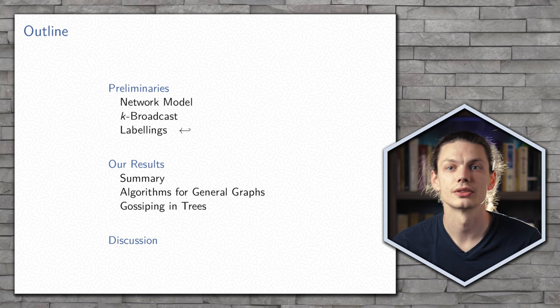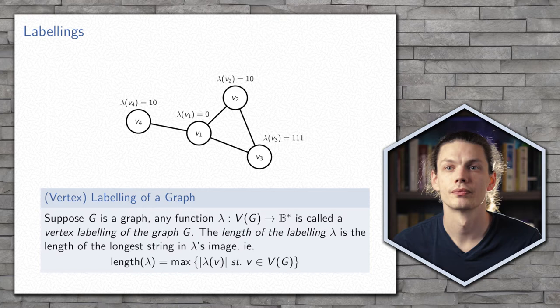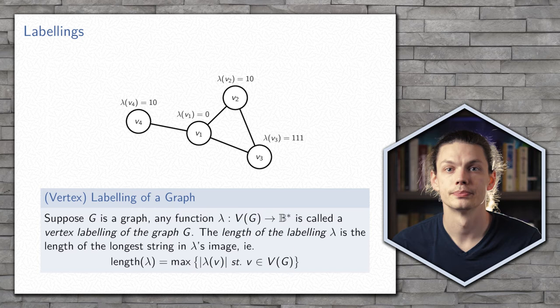So, to solve this problem, we introduce labellings. A labelling is an assignment of binary strings to the vertices. We say that the length of the labelling is equal to the length of the longest string that it assigns. In our example here, the length of this labelling lambda is 3, since a string of length 3 is assigned to vertex 3.